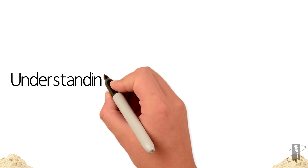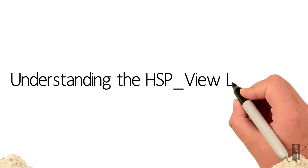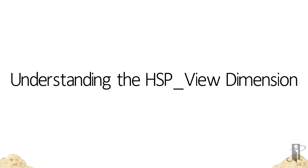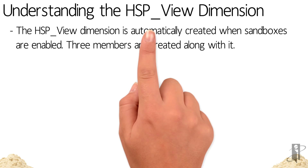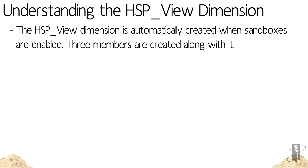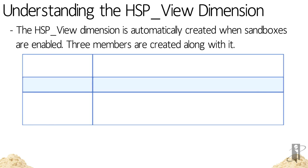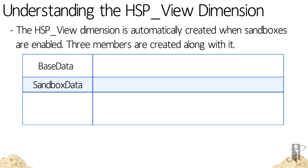Let's talk about the HSP View dimension — what is this strange, mysterious dimension? It's a dimension that is automatically created when sandboxes are enabled in an application. There are three members created along with it: Base Data, Sandbox Data, and Consolidated Data.